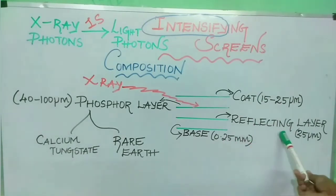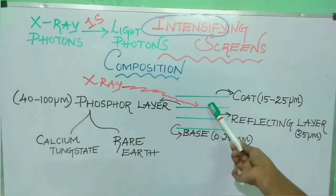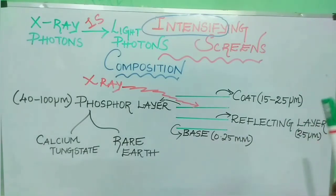Next is reflecting layer. The thickness of reflecting layer is 25 micrometers. This reflecting layer is made up of magnesium oxide or titanium dioxide. When x-ray photons interact with the active phosphor layer, light photons are emitted in all directions. The reflective layer redirects those emitted light towards the film.